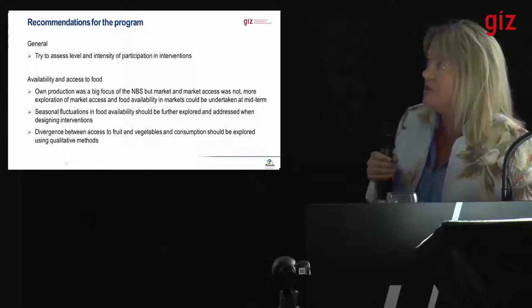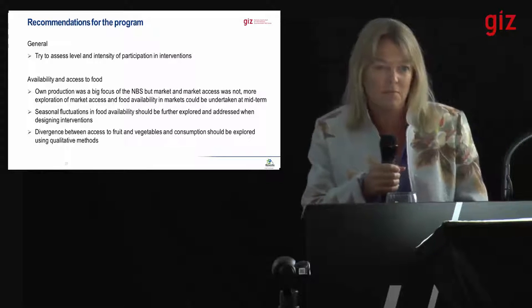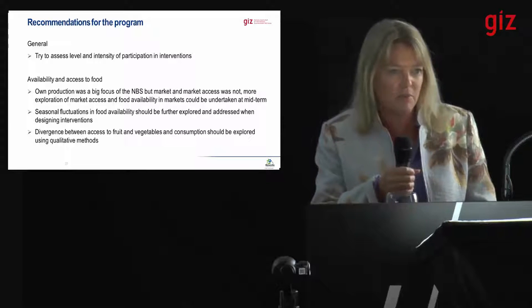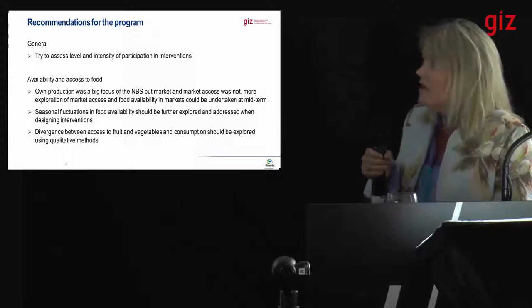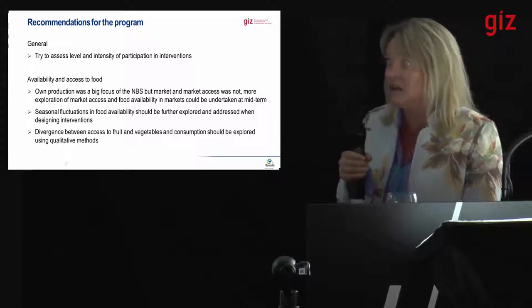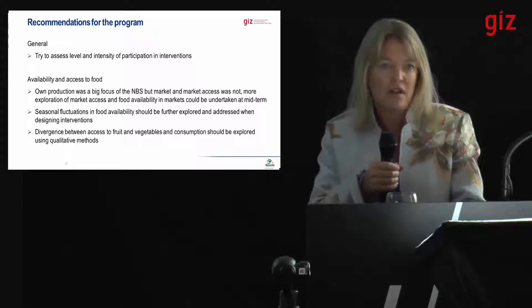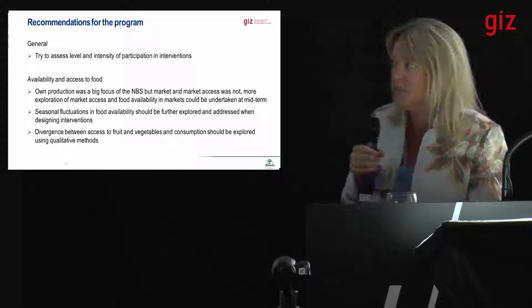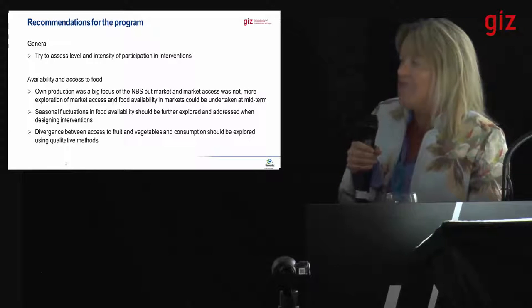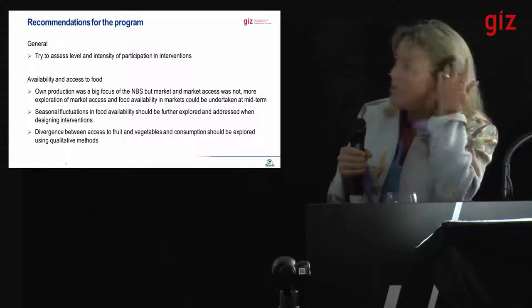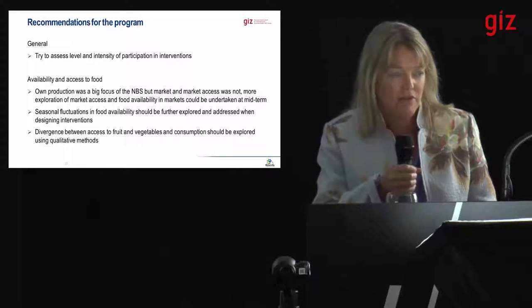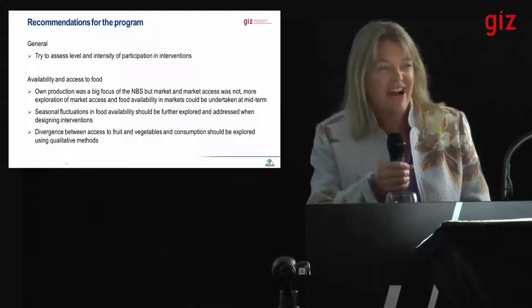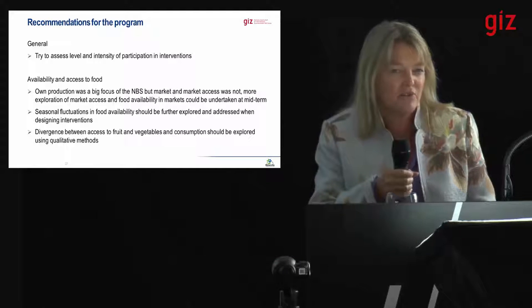In terms of availability and access to food, own production was a big focus in the baseline surveys but there was nothing on markets — we don't know about the population's access to markets or how they use them for food security. Seasonal fluctuations in access to other foods would also be interesting to know, since it's quite important when trying to influence dietary diversity. There was a divergence between households who claimed access to fruits and vegetables through wild collection or home gardens and their actual intakes — why do they have access to fruit but neither the woman nor the child is eating it? That's something to investigate.